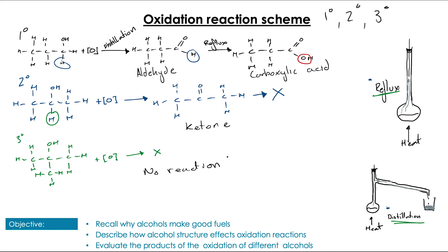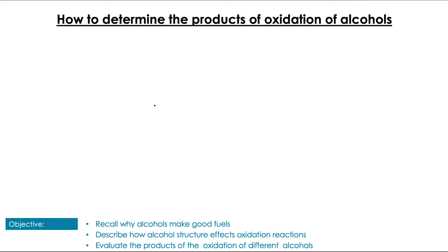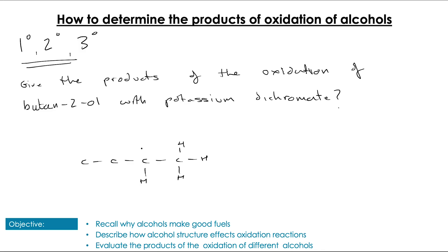So how can we apply this to determining what products we're going to get? It really is as simple as thinking about primary, secondary, and tertiary. Let's have a look at this question. Give the products of the oxidation of butan-2-ol with potassium dichromate. When we draw out butan-2-ol, we find because the alcohol group is on the second carbon that we have a secondary alcohol. If we have a secondary alcohol, then we're going to form the corresponding ketone. We've got those hydrogens to lose, but we can't go all the way to a carboxylic acid. So we're going to form the carbon chain on either side of the C double bond O, giving us the ketone.